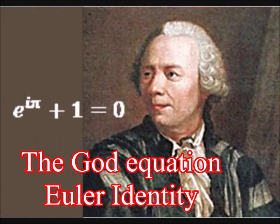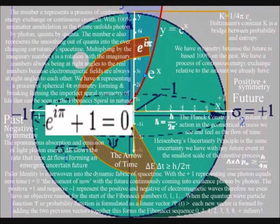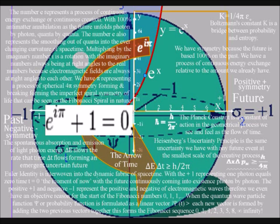This equation takes the form of Euler's identity. The idea is that E would represent a rate of change as time and space unfolds, with Euler's identity being interwoven into the dynamic fabric of space-time. With the plus one representing one photon equals zero time, T equals zero, the moment of now, within an individual reference frame.